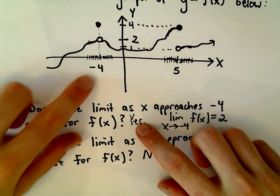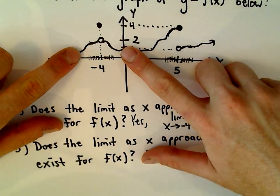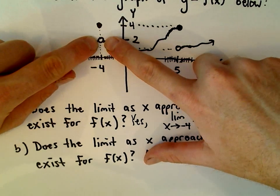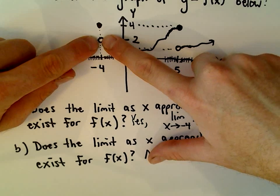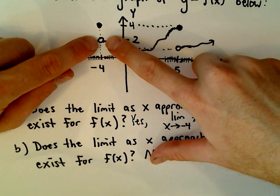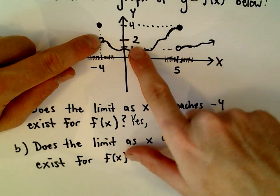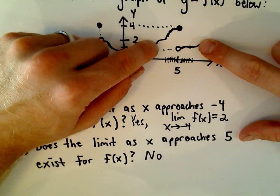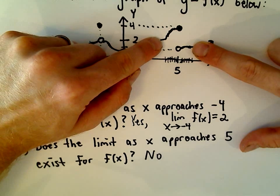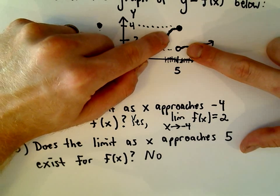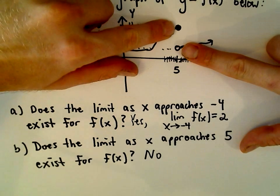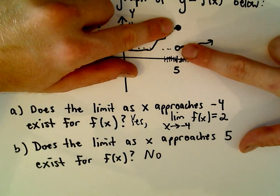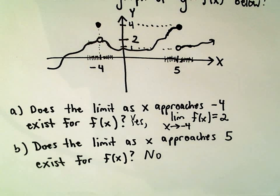Another way to think about it: for a limit to exist, for example at negative 4, if I put my fingers on the graph and bring them in closer and closer to negative 4, they're going to basically touch — they get closer and closer together, and that y value where they would be touching is the y value of 2, so the limit exists. If I do the same thing at x equals 5 and take x values closer and closer to 5, are my fingers going to be touching? No, because one's up here and one's down here. If that happens, we say the limit simply does not exist.